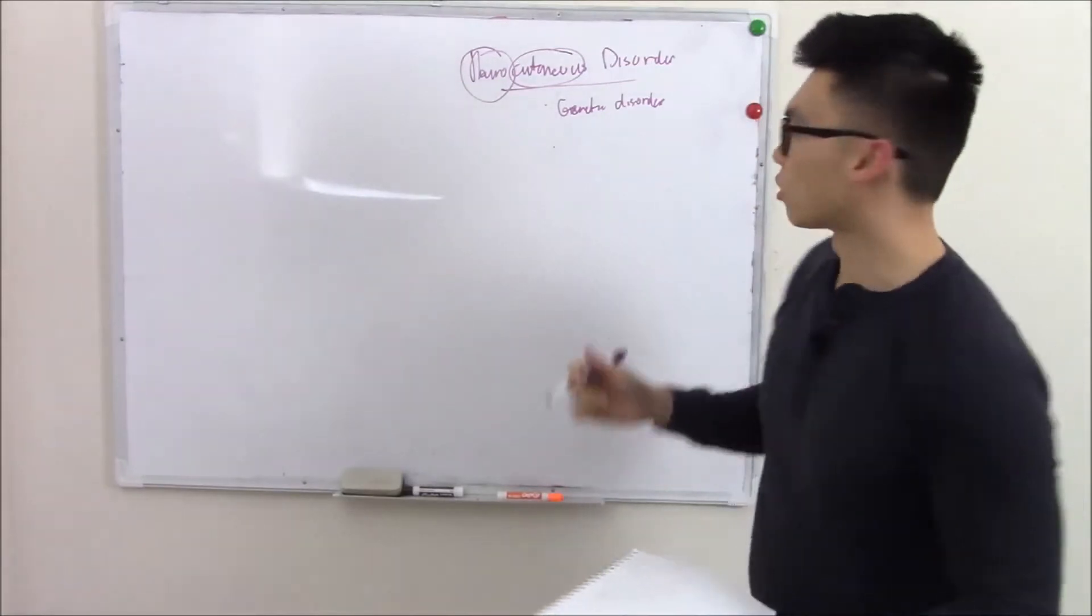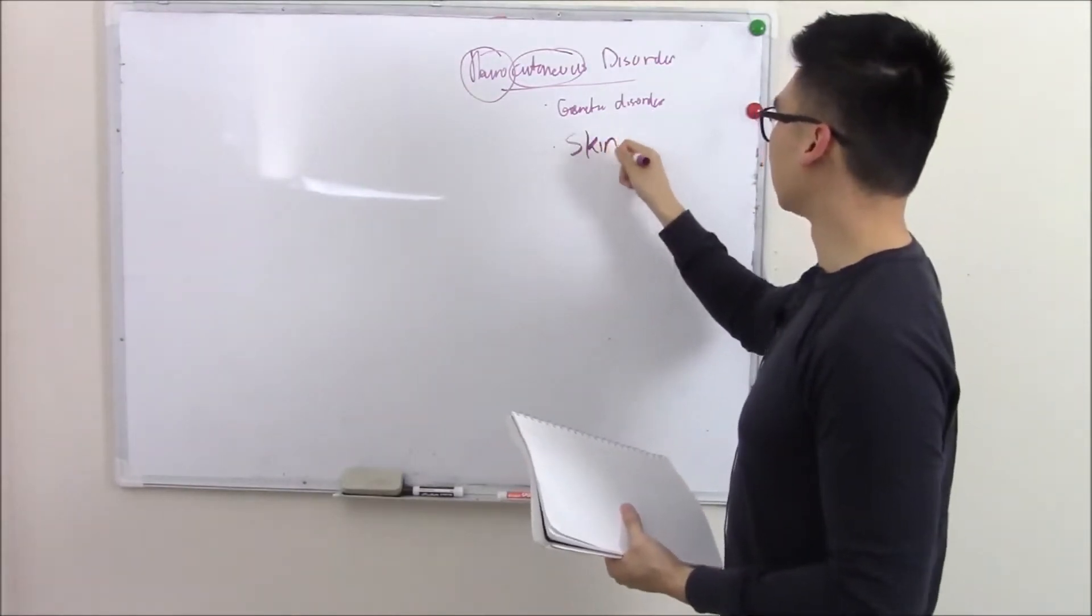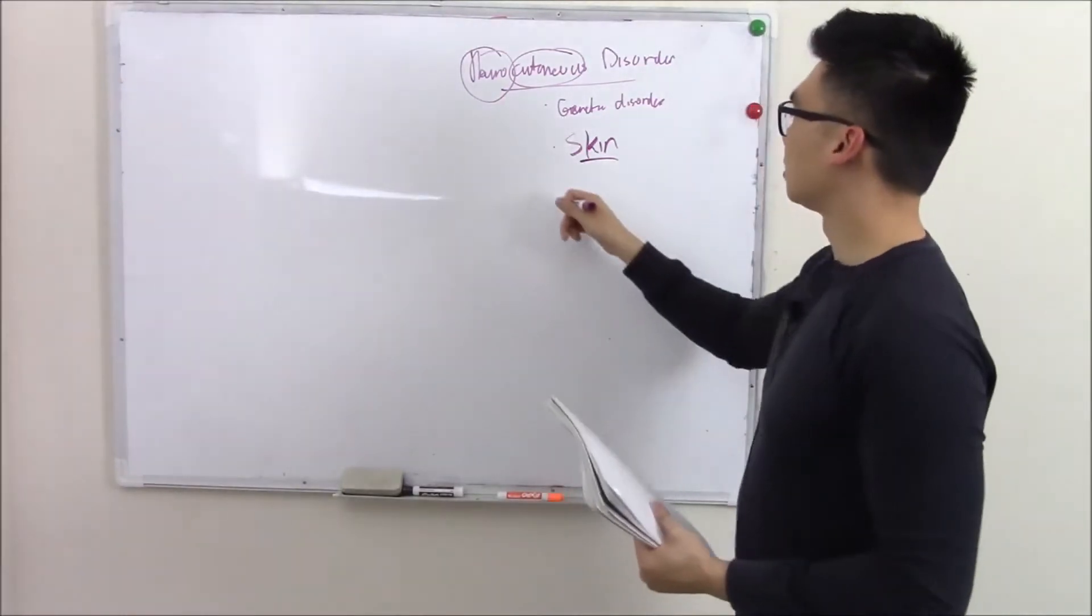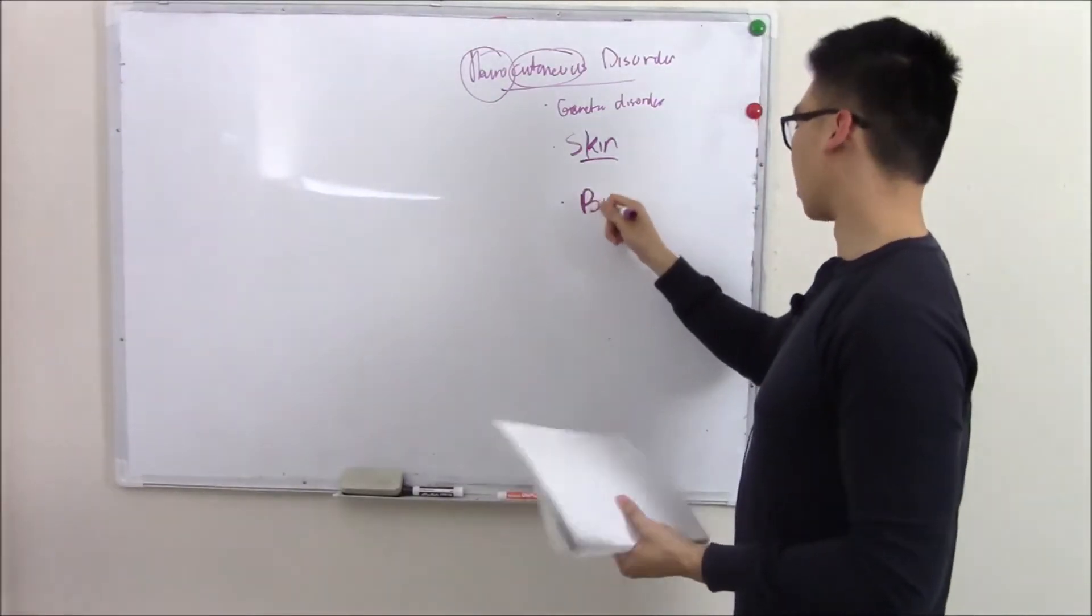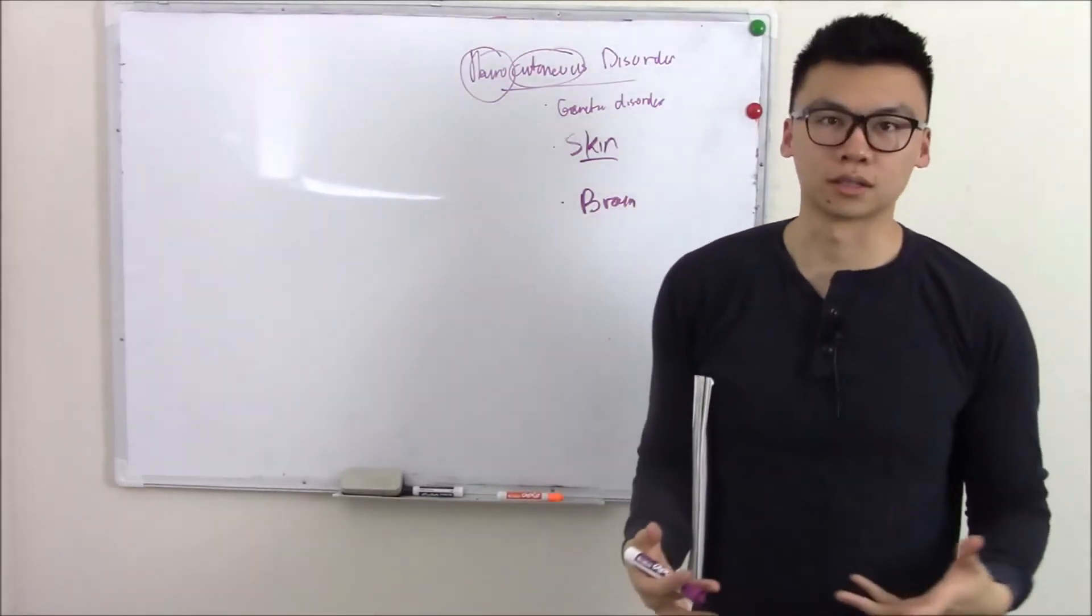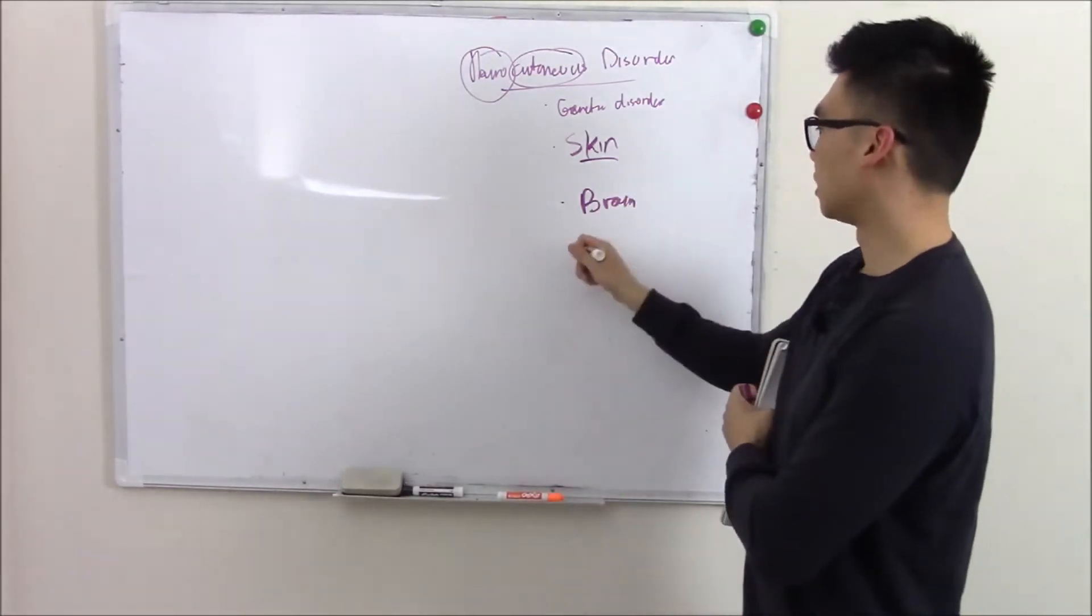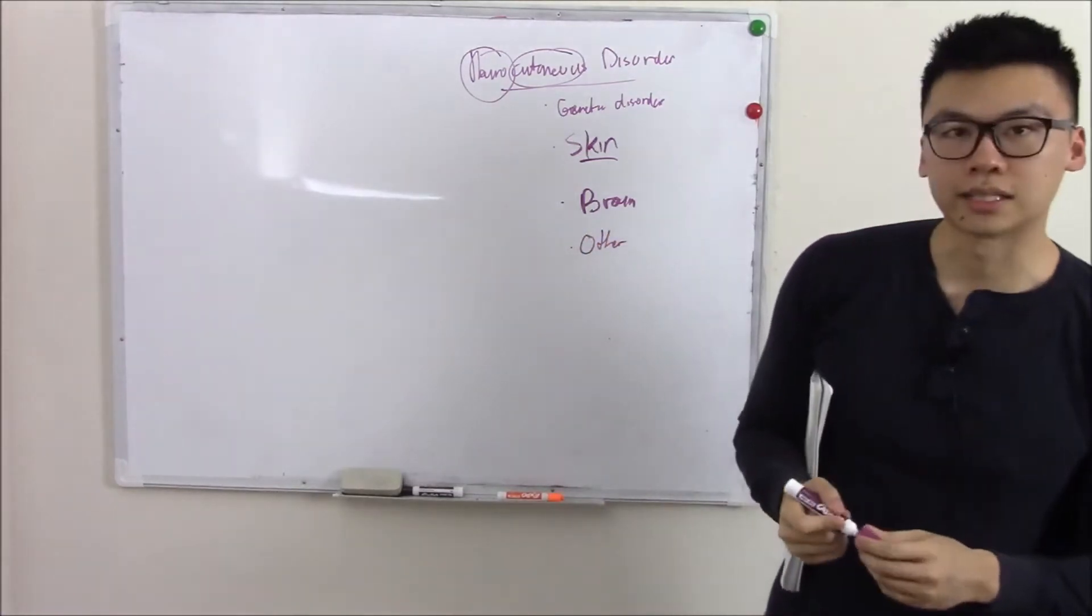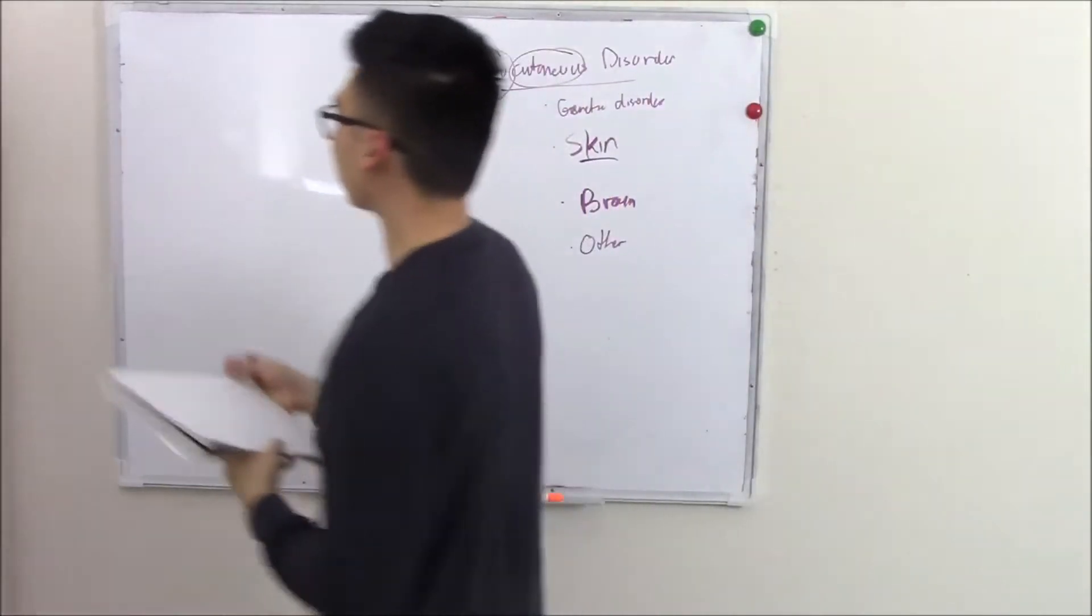When we talk about these disorders, we're going to really emphasize the skin lesions because that's our initial hint that there's something going on. Then we're going to talk about what's going on in the brain. These disorders also affect other organs, so other manifestations. There's not a lot of neurocutaneous disorders, only four.